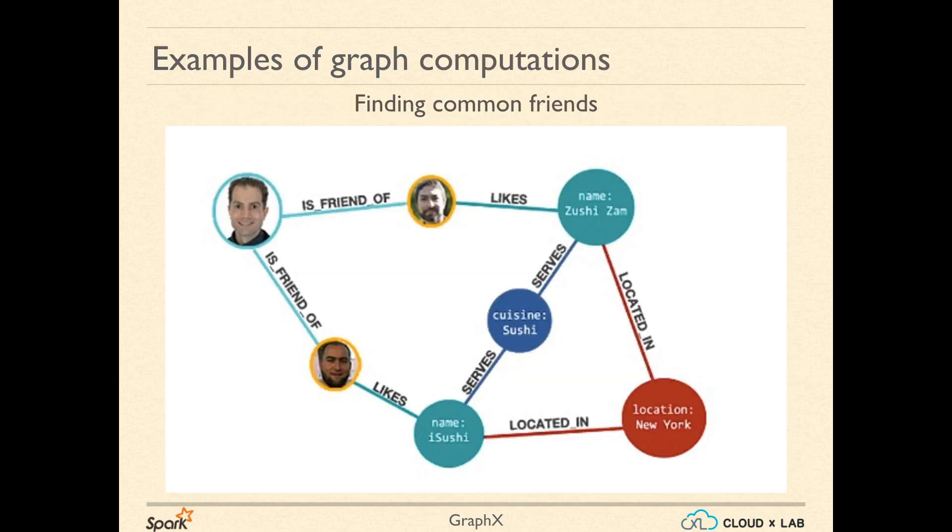Most computational problems have Graph in one way or another. Many real-life problems are solved using the graph data structure. Here are a few examples of Graph problems at large scale. First one is finding common friends in a social graph such as Facebook.